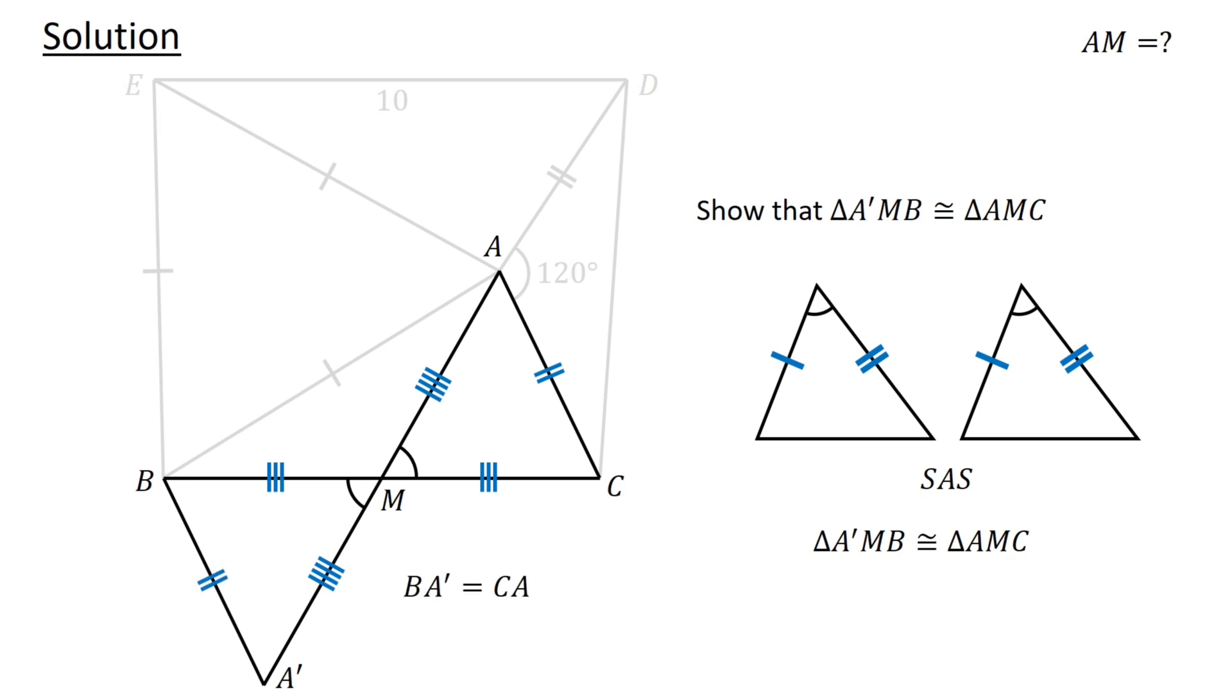Similarly, angles BA'M and CAM are corresponding angles in congruent triangles. Therefore, angle BA'M equals angle CAM. Let's denote the angles as X.